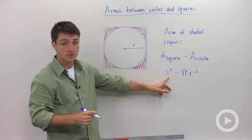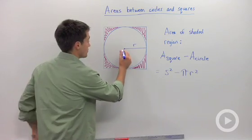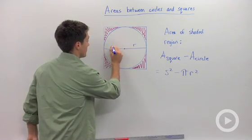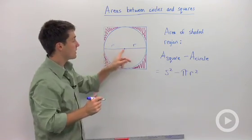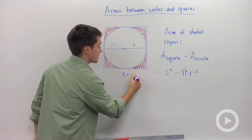So what we have to ask ourselves is, how is s related to r? Well if I drew in another radius here you can see that that is going to be the distance of one side. So the side of this square is 2r.